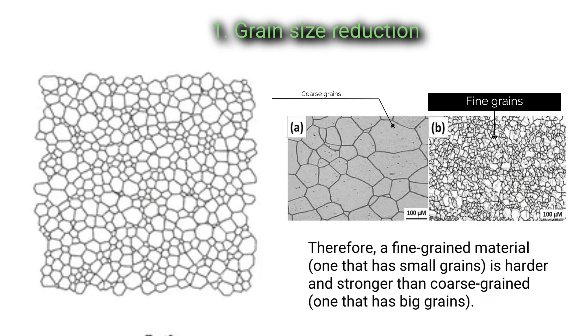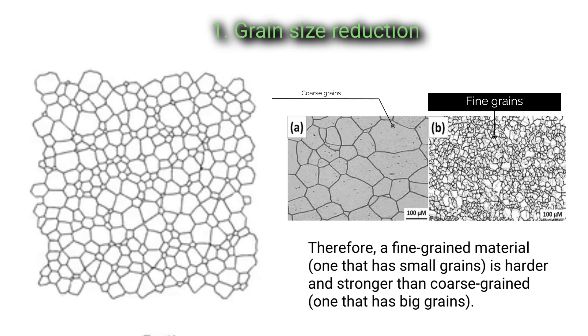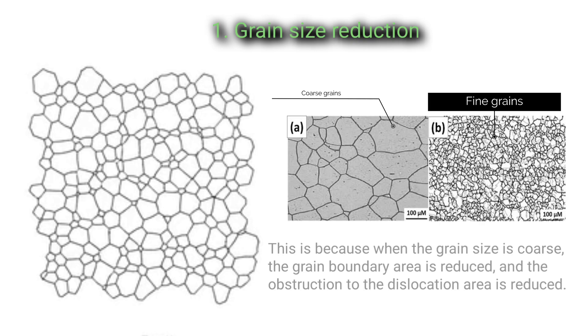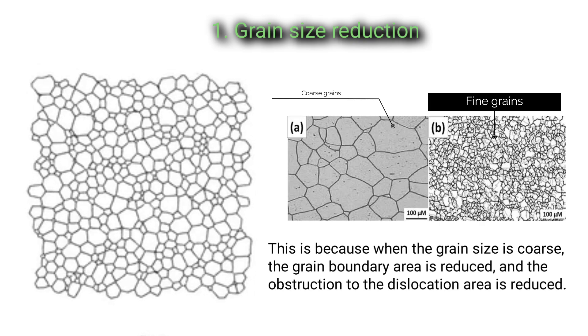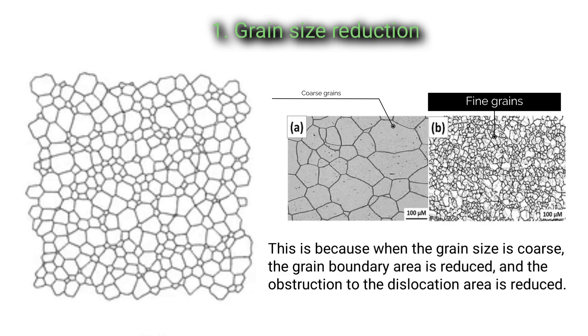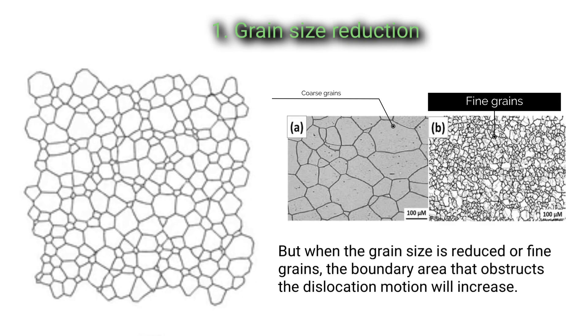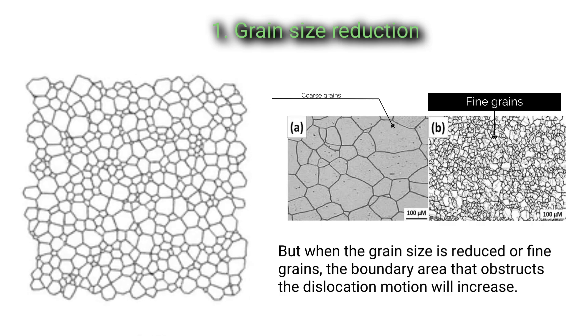Therefore, a fine-grained material, one that has small grains, is harder and stronger than coarse grains, one that has big grains. This is because when the grain size is coarse, the grain boundary area is reduced and the obstruction to the dislocation area is reduced. But when the grain size is reduced or fine grains, the boundary area that obstructs the dislocation motion will increase.